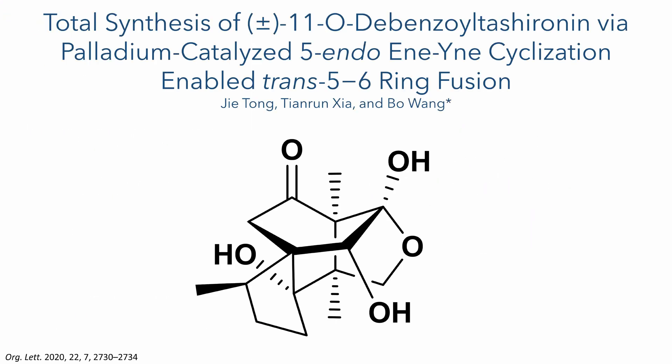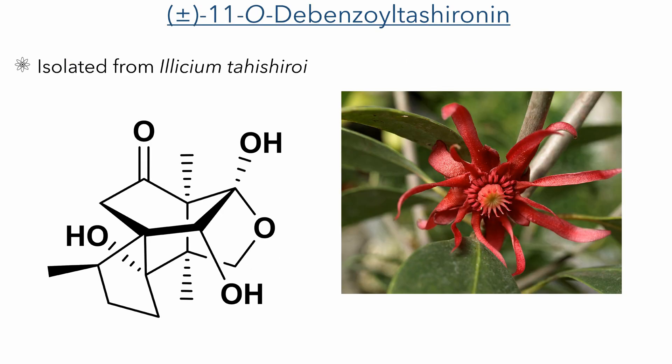The work we are going to look at today was published by the Wang Group in Org. Lett., entitled 'The Total Synthesis of 11-O-Debenzoyl-Tashirenin via Palladium-Catalyzed 5-Endo-Enyne Cyclization Enabled Trans-5-6 Ring Fusion.'